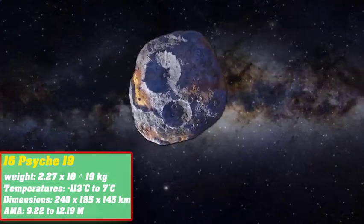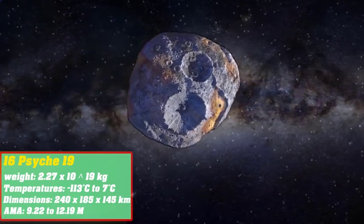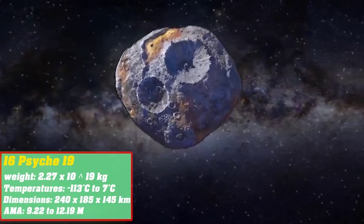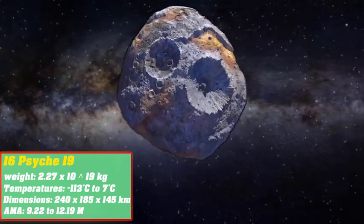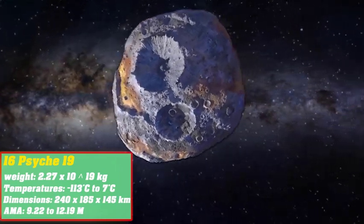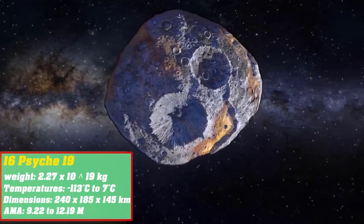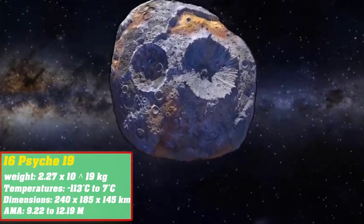Or about negative 113 degrees Celsius to 7 degrees Celsius. It is a pretty cold planet. The apparent magnitude of this asteroid is from 9.22 to 12.19.